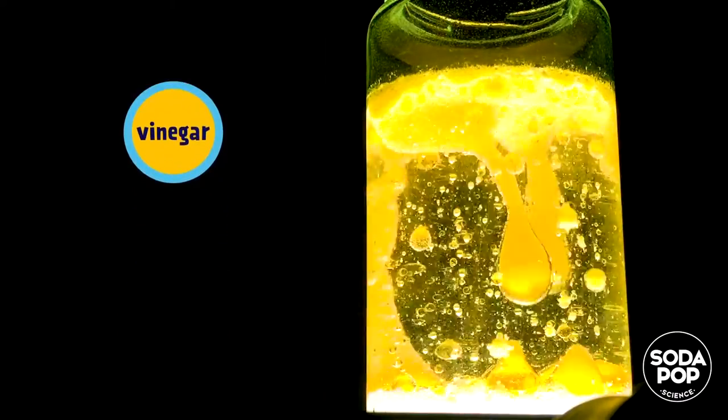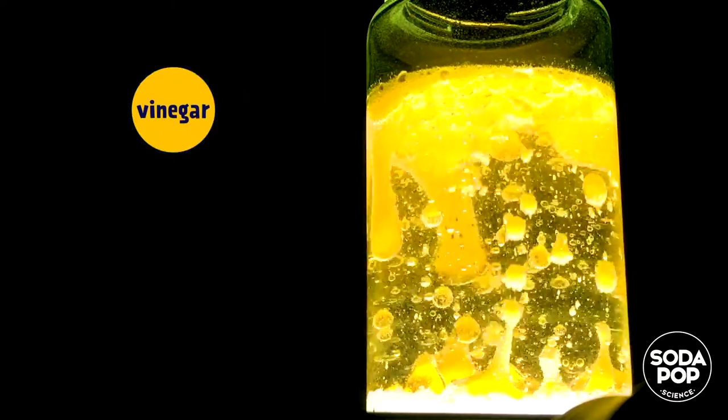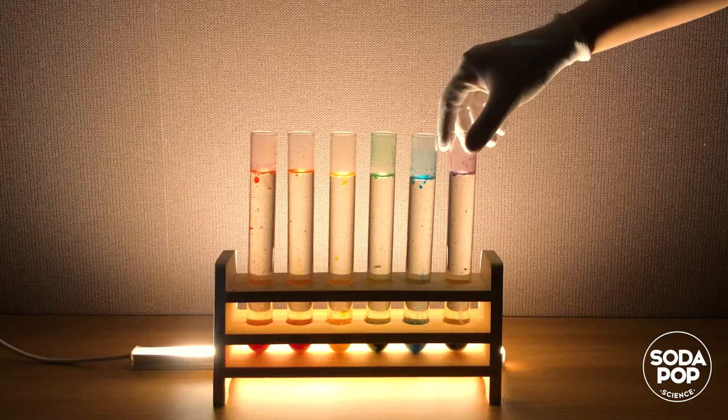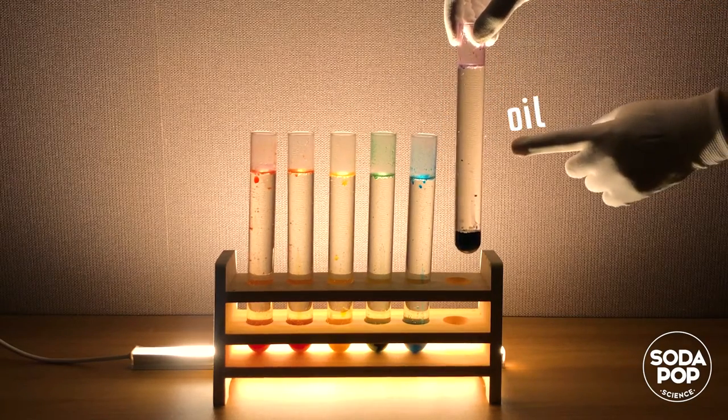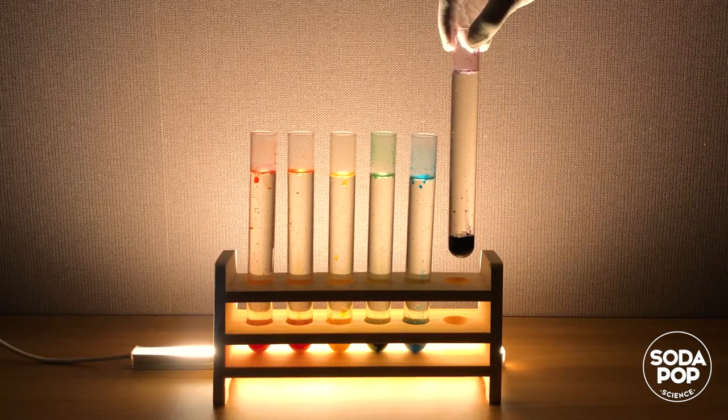You can see the bubbles take some vinegar to the top. When the bubbles pop at the surface, vinegar droplets fall back down. That's because vinegar is more dense than oil. If you want to learn more about liquid density, watch the previous video Rainbow in a Jar.